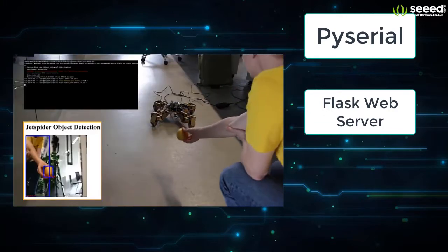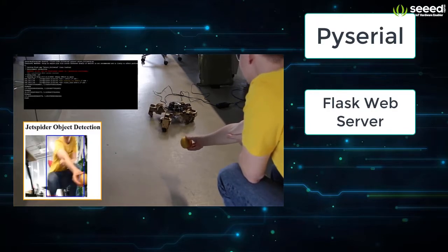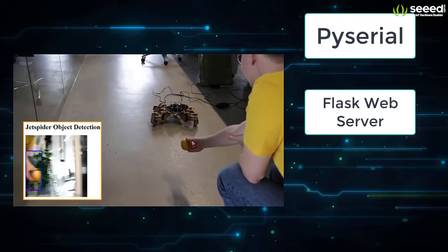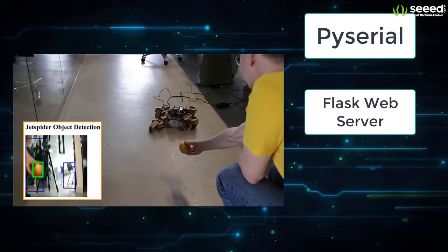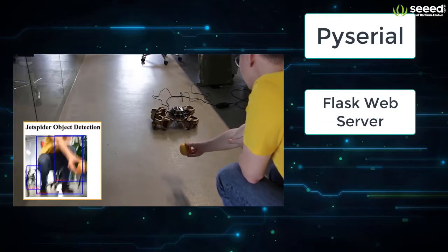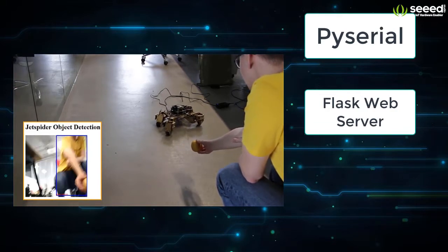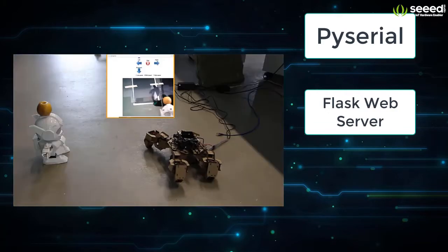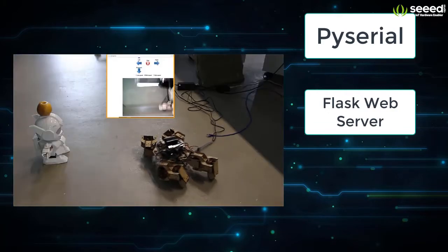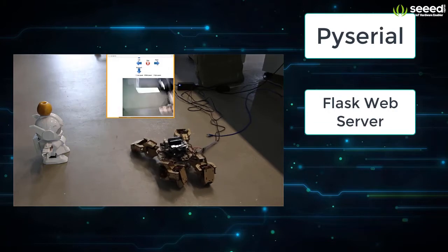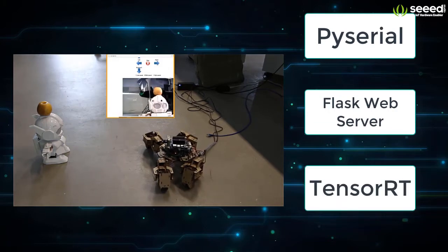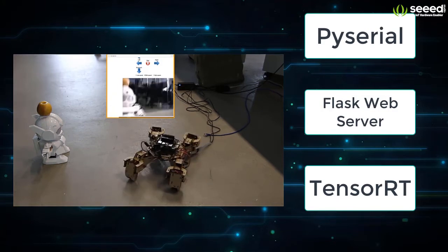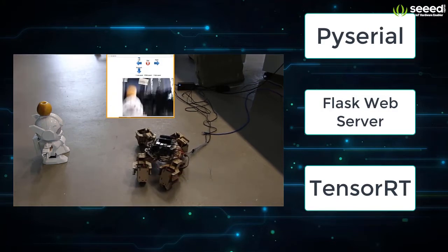For object following, I partially used NVIDIA JetBot's object following notebook. It utilizes a pre-trained neural network that was trained on the COCO dataset to detect 90 different common objects like apples, chairs, and people, which is later optimized using NVIDIA TensorRT on the Jetson Nano. I used Flask again to serve the image from the webcam with detection labels.